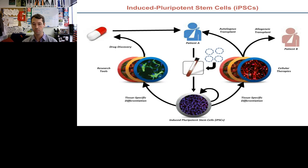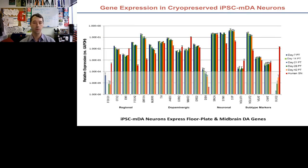What exactly are these iCell dopamine neurons? This is RT-PCR gene expression analysis looking at these cells at different time points post-thaw — between 7 and 42 days — compared to the human substantia nigra. Key genes include FOXA2, LMX1, Nurr1, and TH — the important midbrain neurogenesis genes I've been discussing. What I want you to appreciate is that across this gene span, these IPS-derived midbrain dopamine neurons are expressing these floor plate and midbrain-specific genes at levels very similar to what we find in the human substantia nigra.